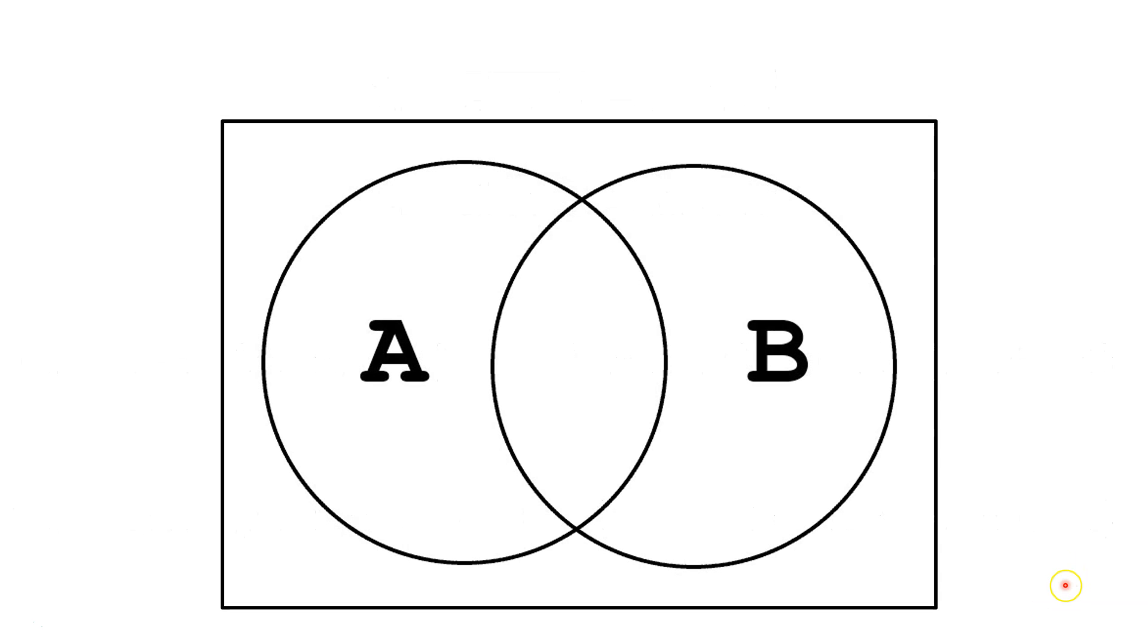Let's look at this Venn diagram. This A covers everything in the A set. This B covers everything in the B set. This area here covers everything that's both in the A and B set. And this here covers everything that's outside of both the A and the B set.